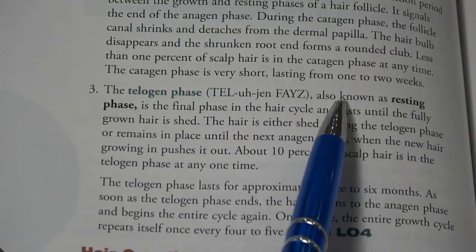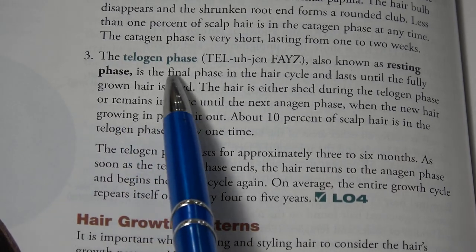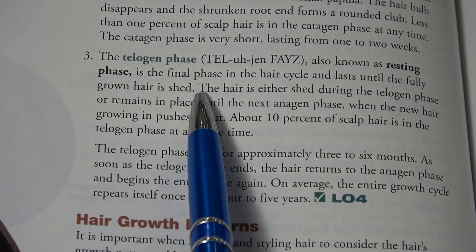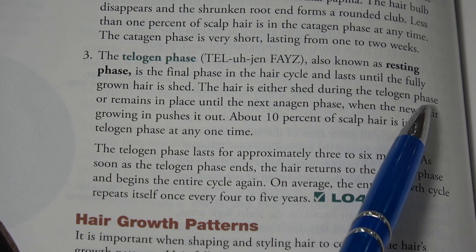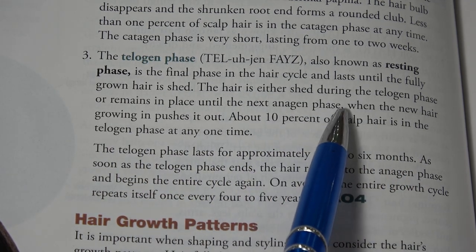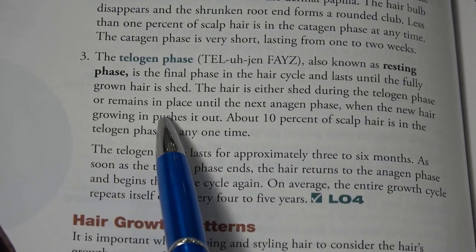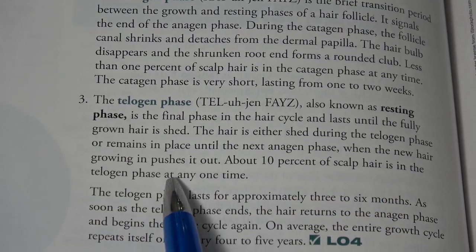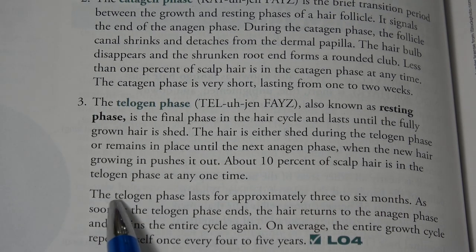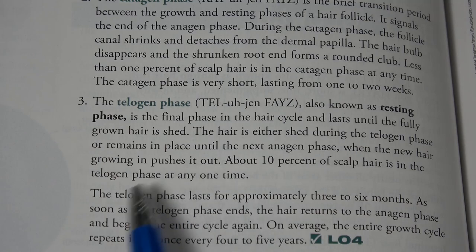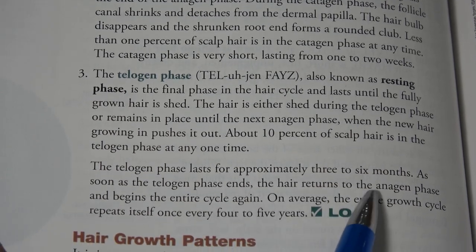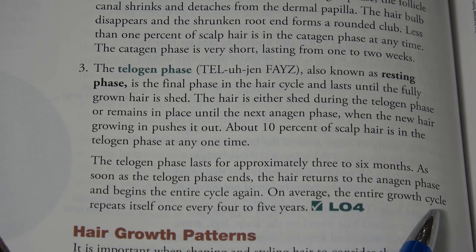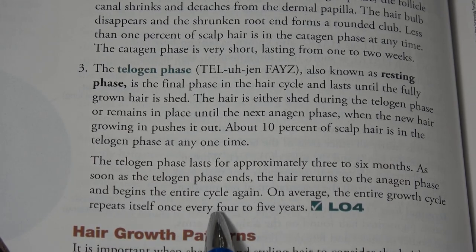The catagen phase is the brief transition period between the growth and the resting phases of hair follicles. The telogen phase, also known as the resting phase, is the final phase in the hair cycle and lasts until a fully grown hair is shed. The hair is either shed during the telogen phase or remains in place until the next anagen phase, when new hair growing in pushes it out. About 10% of scalp hair is in the telogen phase at any one time, and this phase lasts approximately three to six months. As soon as the telogen phase ends, the hair returns to the anagen phase and begins the entire cycle again, repeating once every four to five years on average.